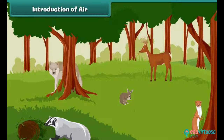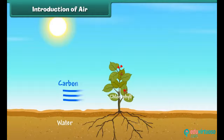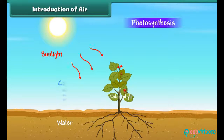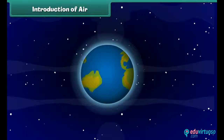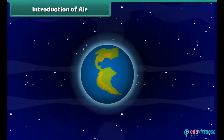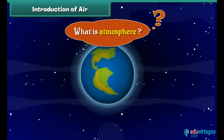Air is very important for almost all life on earth, including plants and animals. Plants need carbon dioxide from air to do photosynthesis and release oxygen into the air. Human beings and animals need to breathe air to get the oxygen they need to survive. Do you know the atmosphere surrounding earth is full of air? But what is this atmosphere? Come along to know.